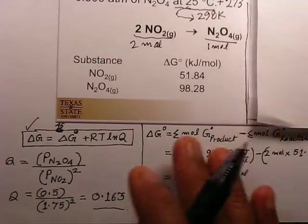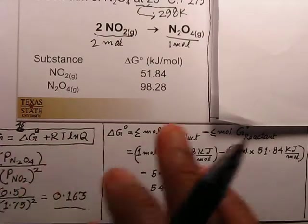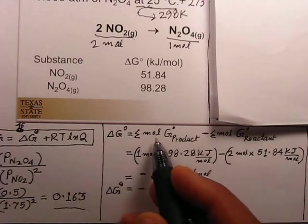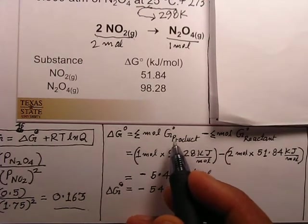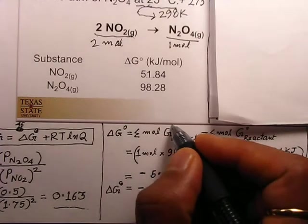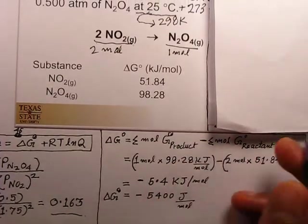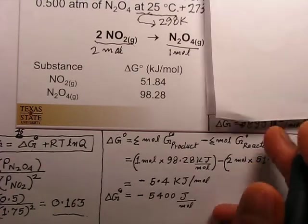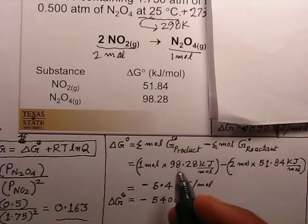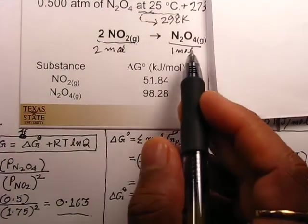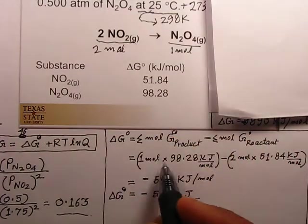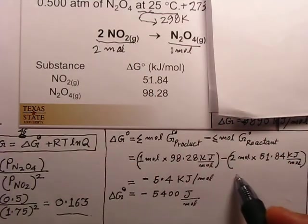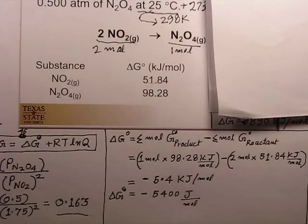Next we calculate delta G° for this reaction. Delta G° equals the sum of the free energy of the products times their moles minus the free energy of the reactants times their moles. That is 1 mole of N₂O₄ at 98.8 kJ/mol minus 2 moles at 51.84 kJ/mol.